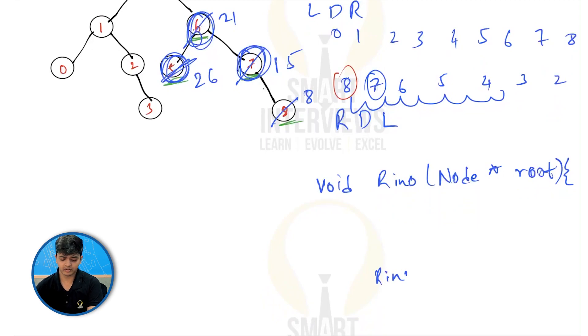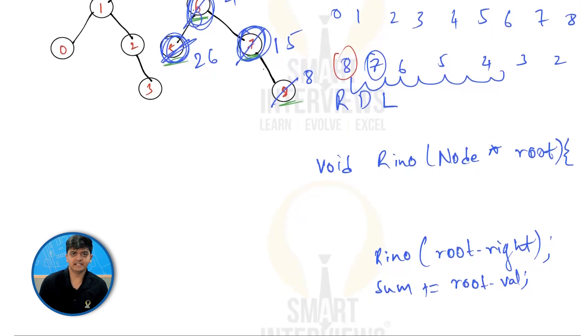Since this is a reverse in-order, I'm going to call reverse in-order on root.right first. Then, I'm going to process the data. What am I doing when I'm processing? I'm going to add the current root value to sum. So sum plus equals root dot value. Then, next I should replace the root dot value with sum. So I'll get root dot value as sum.